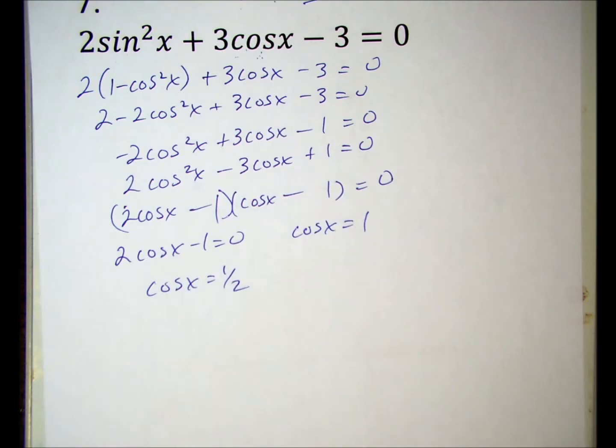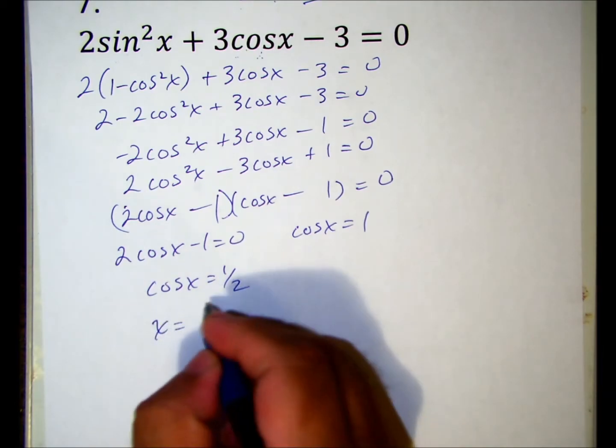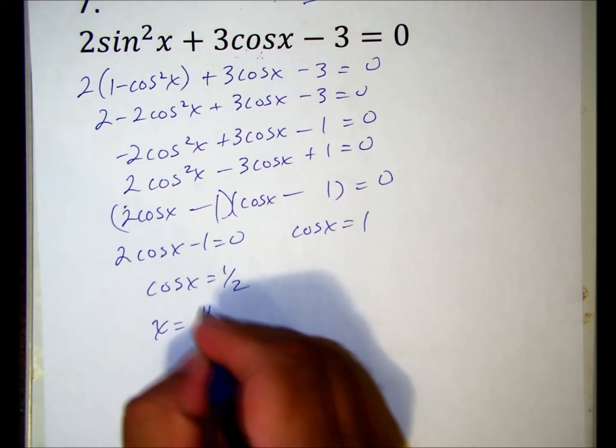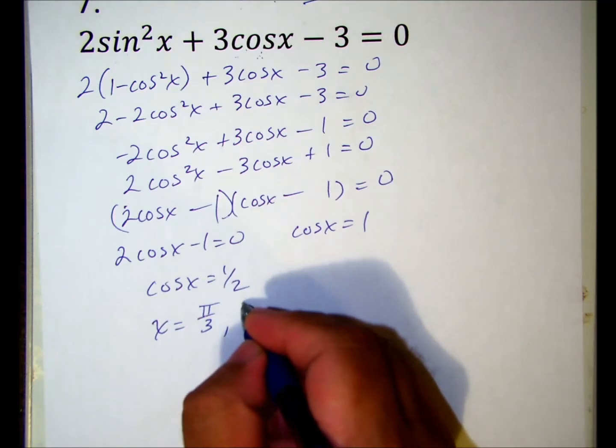When is cosine x equal to one half? That's going to be in the first and fourth quadrant. This is pi thirds, and one pi thirds shy of two pi would be five pi thirds.